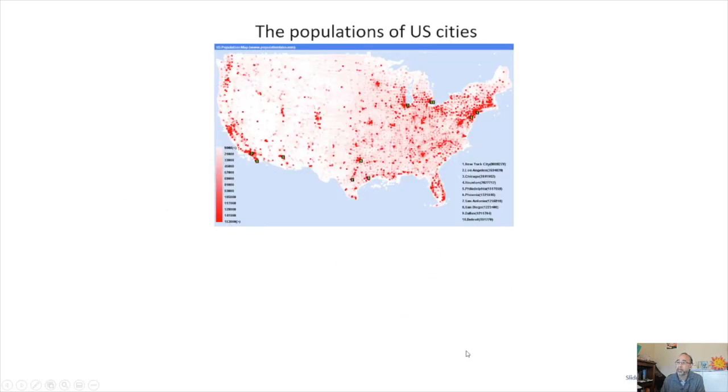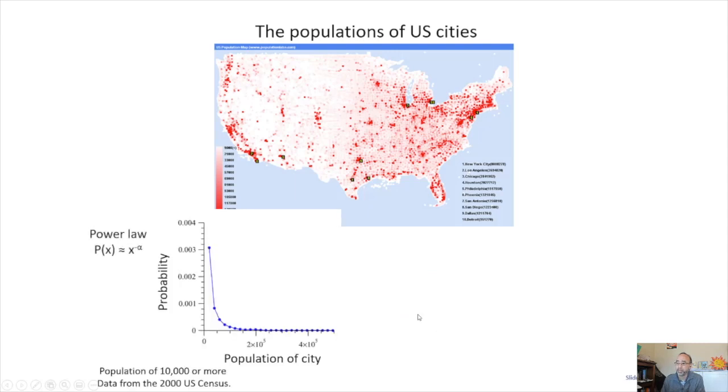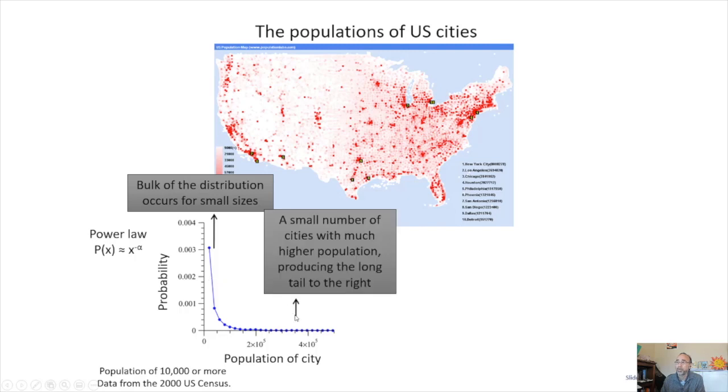And this power law is quite ubiquitous, and an example of this is the population of United States cities. If you map out the distribution of the population of cities by frequencies, you again see that the bulk of distribution occurs for small sizes and small towns, whereas a small number of cities with much higher population produces the long tail to the right.